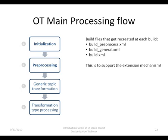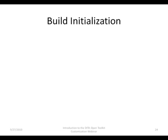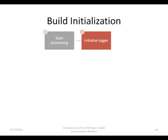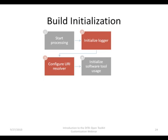The build initialization stage has six steps. Step one starts the processing and doesn't do anything else. In step two, the logging mechanism is configured with the log directory and file name. Step three initializes the URI resolver with the Open Toolkit installation directory and temporary folder. Step four initializes the software tool usage — it determines the availability of Saxon, Apache FOP, or Microsoft HTML Workshop.